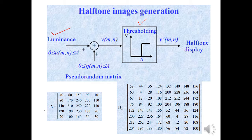Here you can see two matrices H1 and H2. H1 is the input matrix, while the enlarged matrix is created from it. The enlargement of the matrix can be done in two ways: either by replication or interpolation. In coming lectures you are going to study about replication and interpolation, and we will also do some numerical examples based on them.